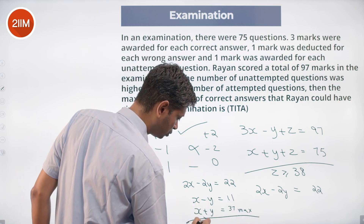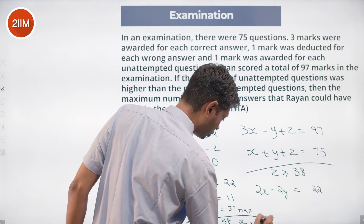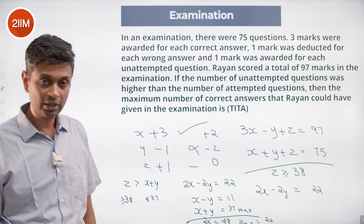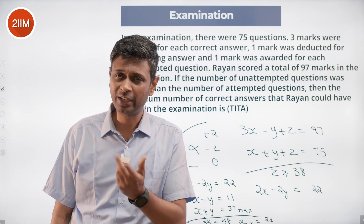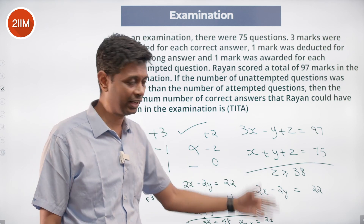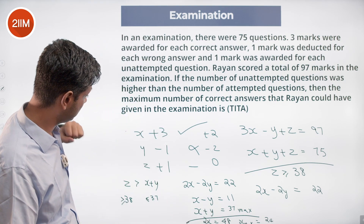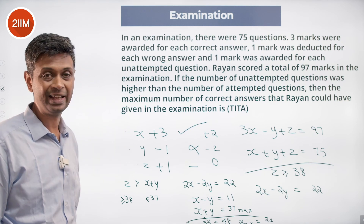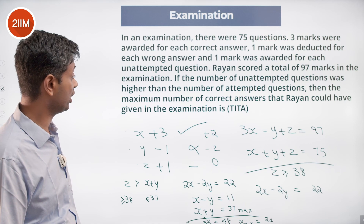To find the maximum value of X: we know X minus Y is 11 and X plus Y maximum is 37. Adding these, 2X equals 48, so X equals 24, and Y equals 13. So 24 correct answers and 13 incorrect answers add up to 37, with 38 unattempted. The maximum number of correct answers Ryan could have given is 24.